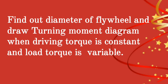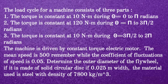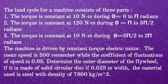Find out the diameter of the flywheel and draw the turning moment diagram when driving torque is constant and load torque is variable. The load cycle for a machine consists of three parts. First, torque is constant at 10 Nm during θ = 0 to π rad. Second, torque is constant at 120 Nm during θ = π to 3π/2 rad. Third, torque is constant at 10 Nm during θ = 3π/2 to 2π rad. The machine is driven by a constant torque electric motor. Mean speed is 500 rpm, coefficient of fluctuation of speed is 0.05. Determine the outer diameter of the flywheel if it is made of a solid circular disc of 0.025 m width, with steel density of 7800 kg/m³.